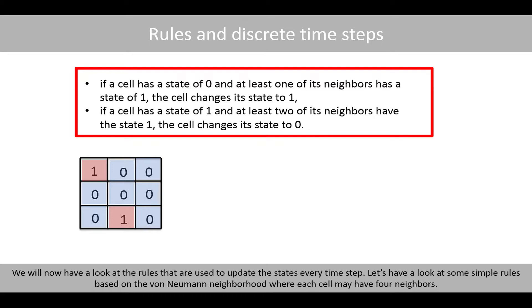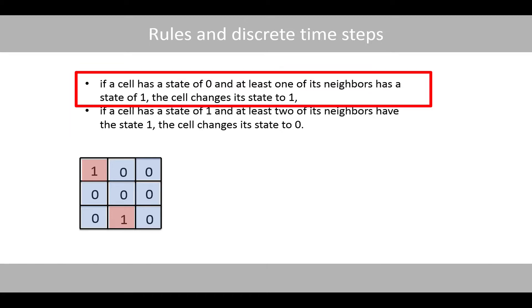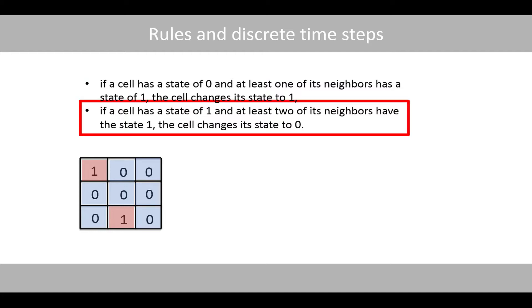We'll now have a look at the rules that are used to update the states every time step. Let's have a look at some simple rules based on the von Neumann neighborhood, where each cell may have four neighbors. The first rule states that if a cell has a state of zero, and at least one of its neighbors has a state of one, the cell changes its state to one. The second rule states that if a cell has a state of one, and at least two of its neighbors have a state of one, the cell changes its state to zero.